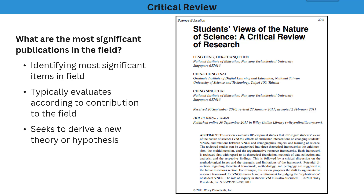Critical reviews are just that — a critical look at the most significant publications in a narrow topic, evaluating specifically the contribution of each item to the field at large. There is no formal quality assessment, but this is where we start to get a little more restrained and methodical. It tries to identify the most significant publications given certain parameters, and then evaluates each article according to its contribution to the topic — looking at what the study contributes, what it lacks, and what the drawbacks of each study are.